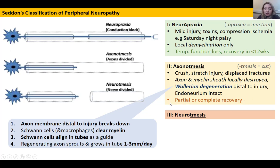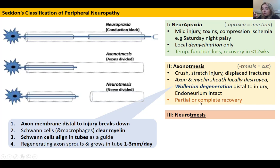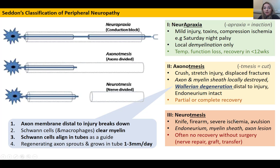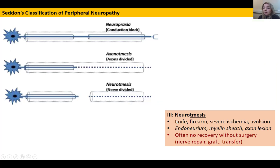You can actually check the rate of recovery using Tinel's sign — you'll remember it can be elicited at the wrist for the median nerve. Tinel's sign refers to tapping a nerve at a point of compression or injury and eliciting a paresthesia. It can refer to any nerve, not just the median nerve, and with axonotmesis you can track the regrowth by eliciting that signal and seeing where the paresthesia is elicited.